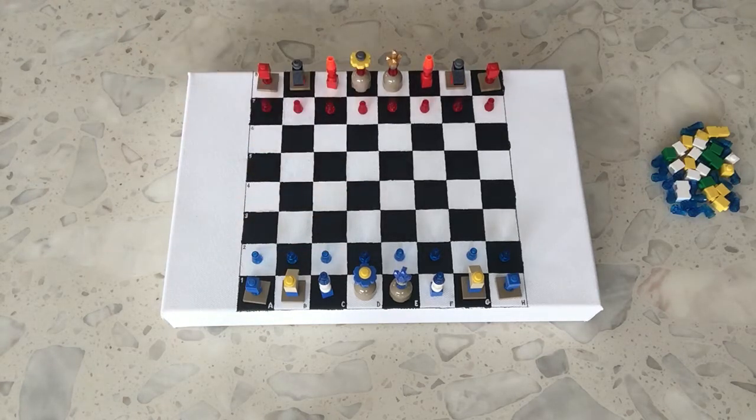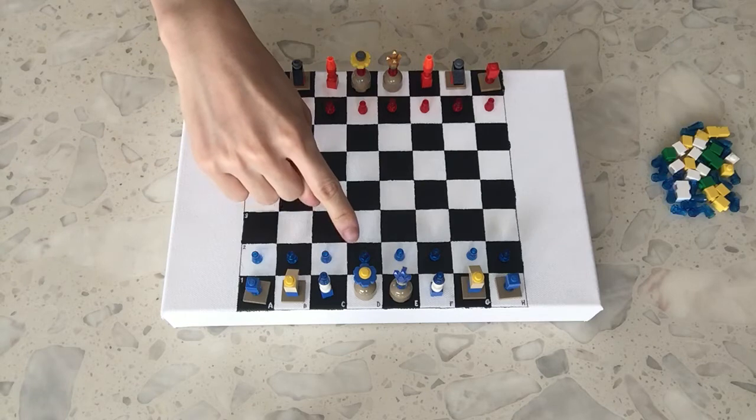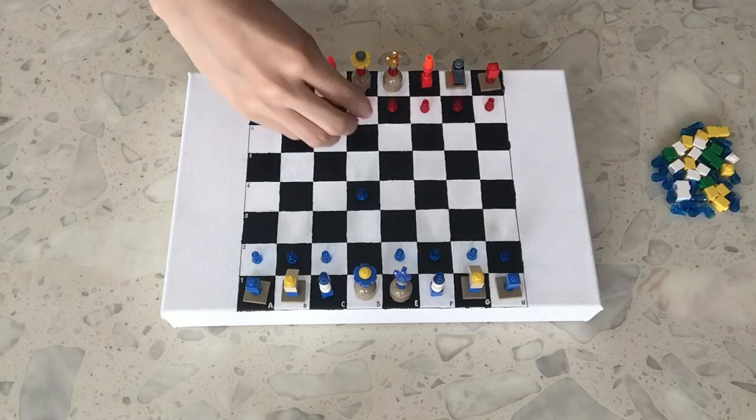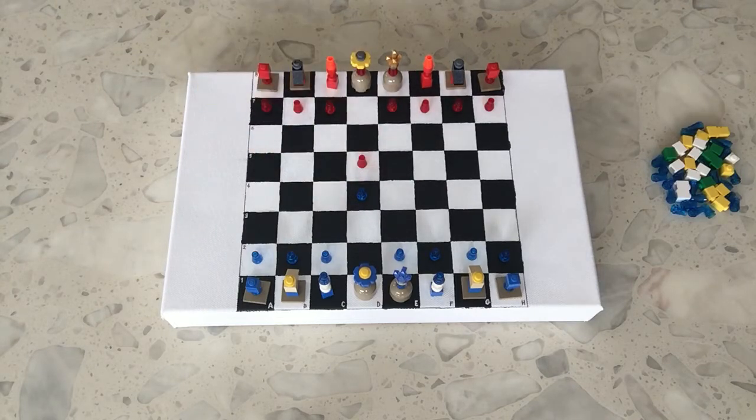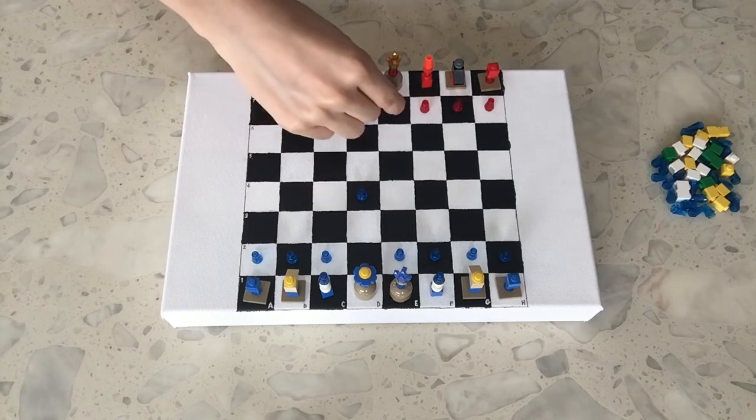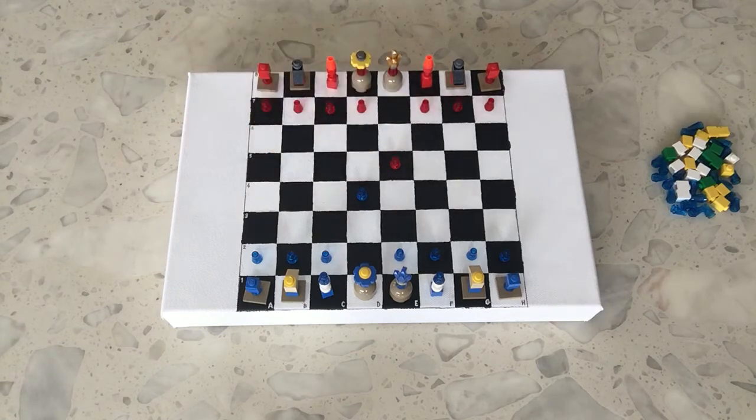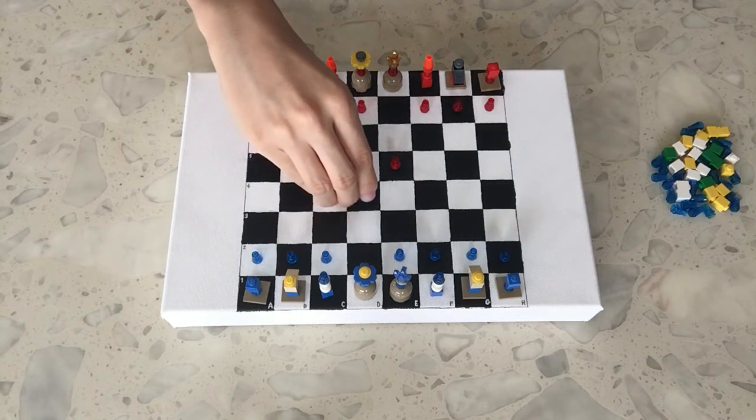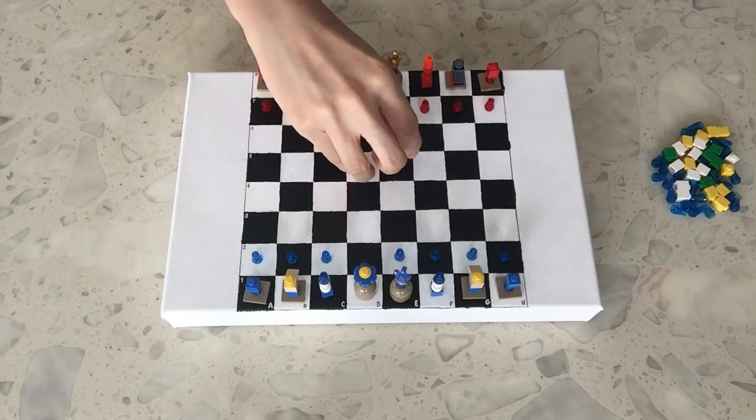So let's get into each of the pieces and how they move. Pawns move one space forward at a time towards the opponent's side of the board, but unless it is the first move of the game for each of the pawns, in which case they can move two spaces forward or one space. And they have a special attacking move. Any time they have an enemy piece directly diagonally in front of them, pawns can only capture enemy pieces by one space diagonally forward like that.